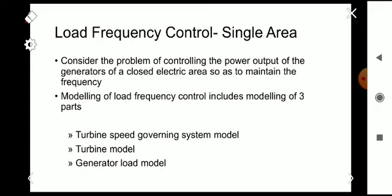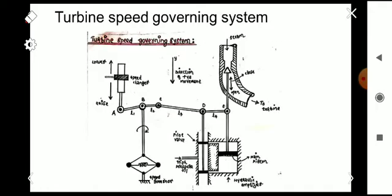Modeling of load frequency control includes modeling of three parts: the turbine speed governing system model, the turbine model, and the generator load model. Today in this video we are going to discuss the main parts of the turbine speed governing system. This is the figure of a turbine speed governing system — here you can see the speed changer, the speed governor, the steam input, and the output to the turbine.